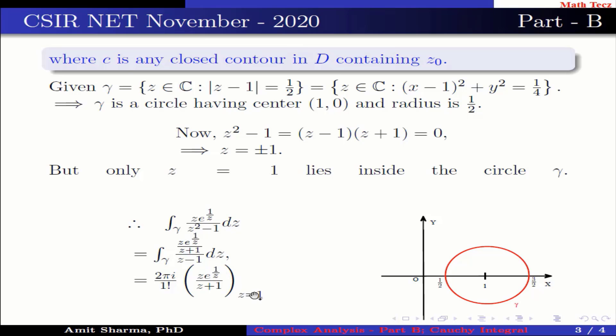Which is equal to 2 pi iota into e by 2, which is equal to iota pi e.